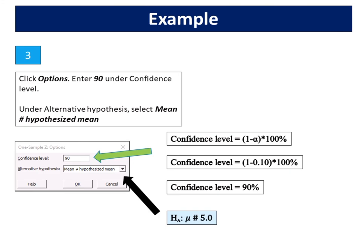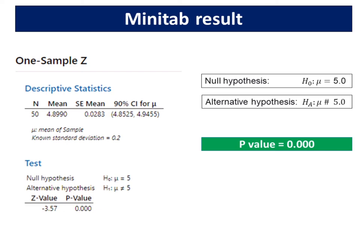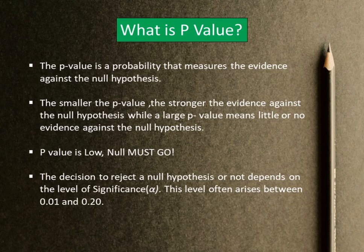The Z value is minus 3.57. The calculation method is shown on the right-hand side. The P value is 0.000. What is P value? The P value is a probability that measures the evidence against a null hypothesis. The smaller the P value, the stronger the evidence against the null hypothesis, while a large P value means little or no evidence against the null hypothesis.